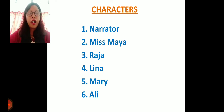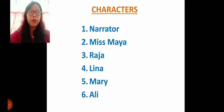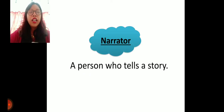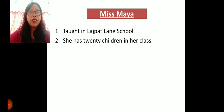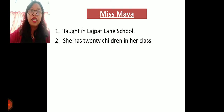The characters in the play Raja's Useful Collection are: the narrator, Miss Maya, Raja, Lena, Mary, and Ali — that means there are six characters in total. Now, the narrator is the person who tells the story. He has a physical appearance but he narrates the story rather than being active in the play. Miss Maya is a teacher who teaches in Large But Lean School.